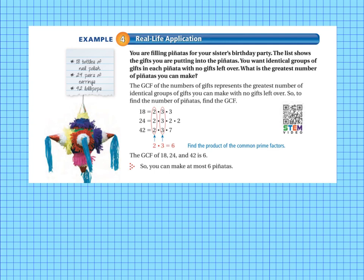Example 4 is the real life application. You're filling pinatas for your sister's birthday party. The list shows the gifts you are putting into the pinatas. You want identical groups of gifts in each pinata with no gifts left over. What is the greatest number of pinatas you can make? You need to key into these terms. So when you're given a problem and it asks you something like the greatest number of pinatas, you need to think, I might be looking for the greatest common factor. So the GCF of the numbers of gifts represents the greatest number of identical groups of gifts you can make with no gifts left over. So to find the number of pinatas, find the greatest common factor.